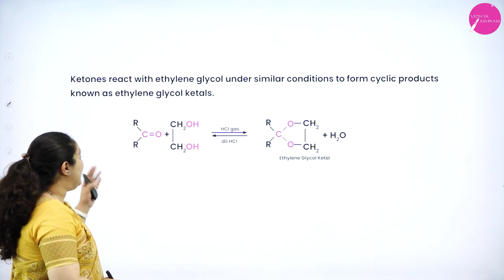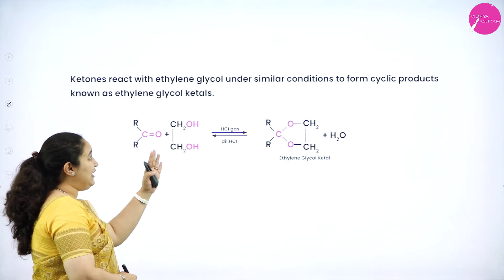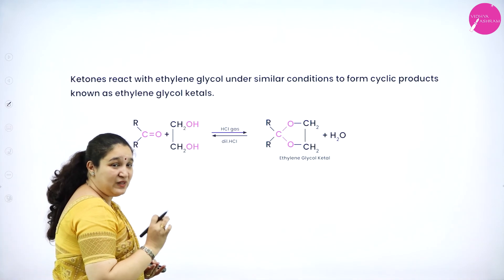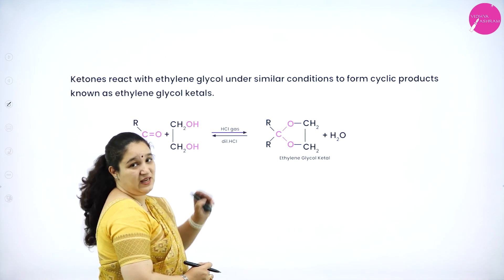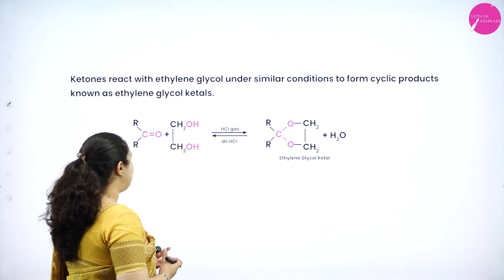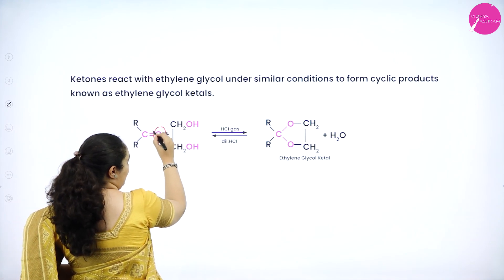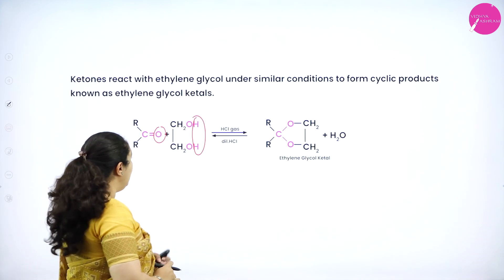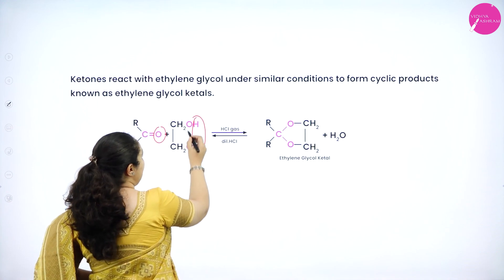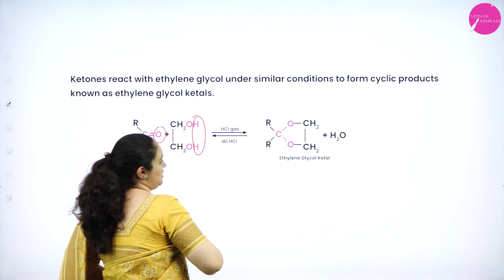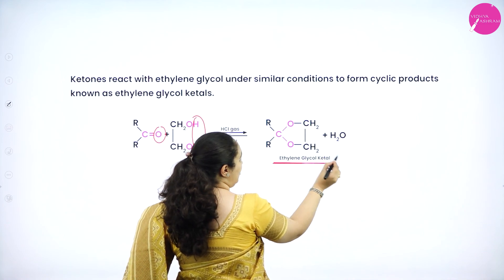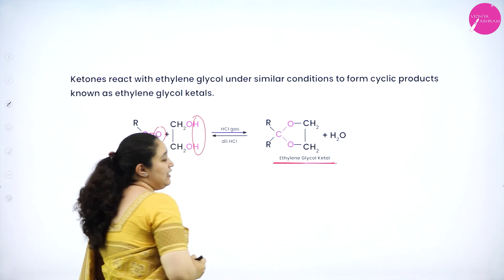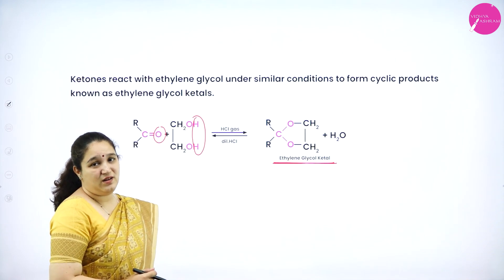One more reaction: ketones react with ethylene glycol (a diol with two OH groups) in the presence of dry HCl when heated. The oxygen and the two hydrogen atoms of the carbonyl group are removed as water, and the carbon atom gets attached to the two oxygen atoms bonded to the CH2–CH2 group, forming a cyclic structure called ethylene glycol ketal.